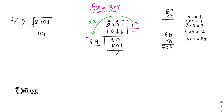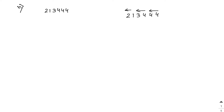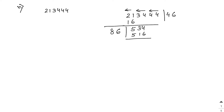Now solving sum number 6: find the square root of 213444. Write down 213444 and make three pairs: 21, 34, 44. Since 4×4=16, the first digit is 4. Subtract: 21 minus 16 = 5. Bring down 34 to get 534. Double of 4 is 8, so try 86×6=516. After subtraction, remainder is 18.